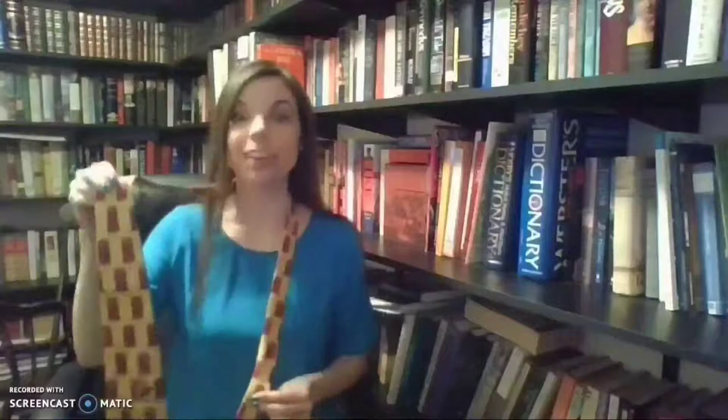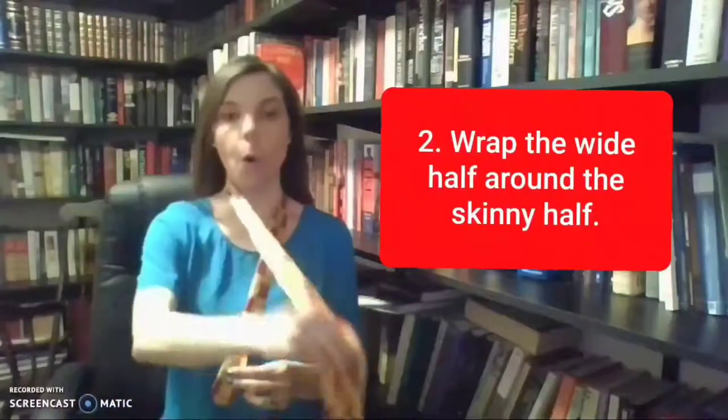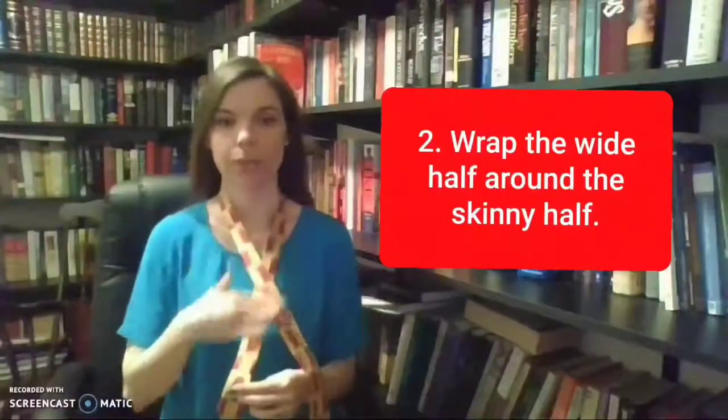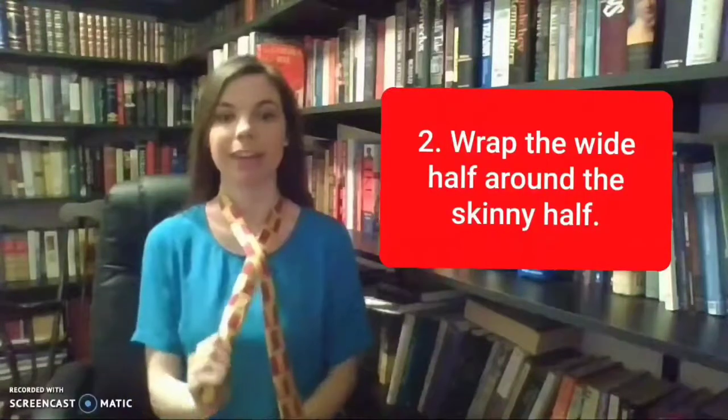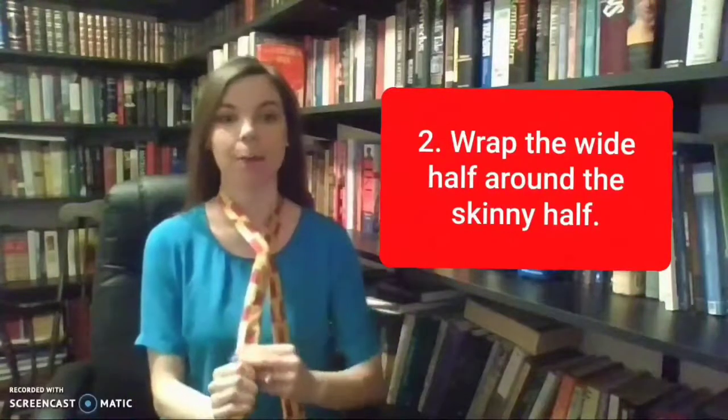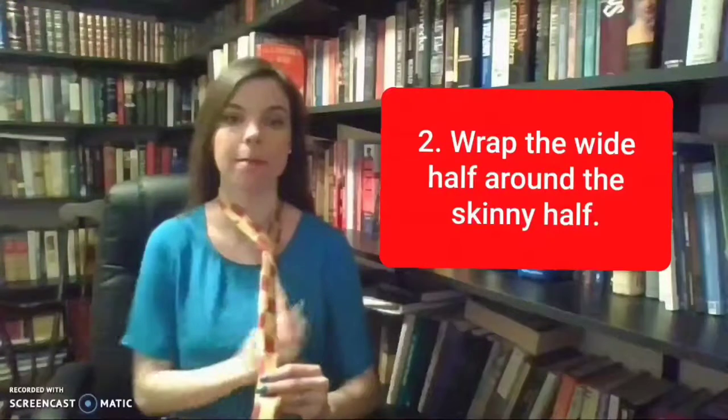Then I'm going to take the wide part of my tie and go over my skinny just like this, almost like I'm creating an X. Then I'm going to keep the skinny still and wrap the wide part of my tie around the skinny.